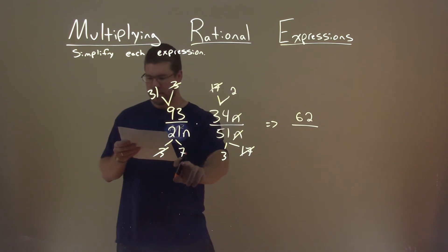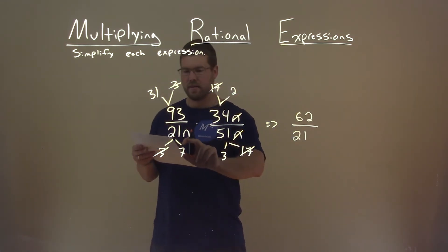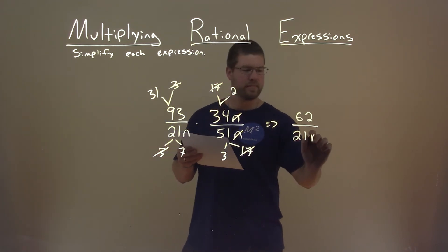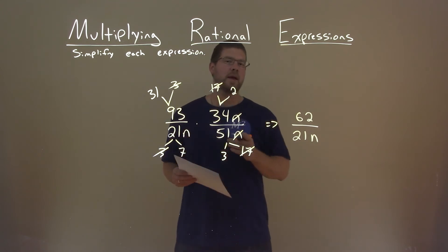And then the denominator, 7 times 3 is 21, but don't forget that n right there.